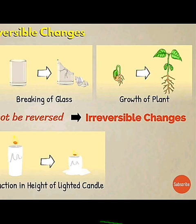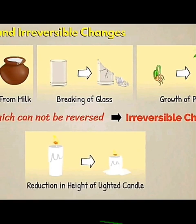Reduction in the height of a lighted candle: we have a candle, we light it, and as it burns the candle gradually finishes and its height decreases. Can you bring it back to its original height? No. So this is an example of irreversible change.